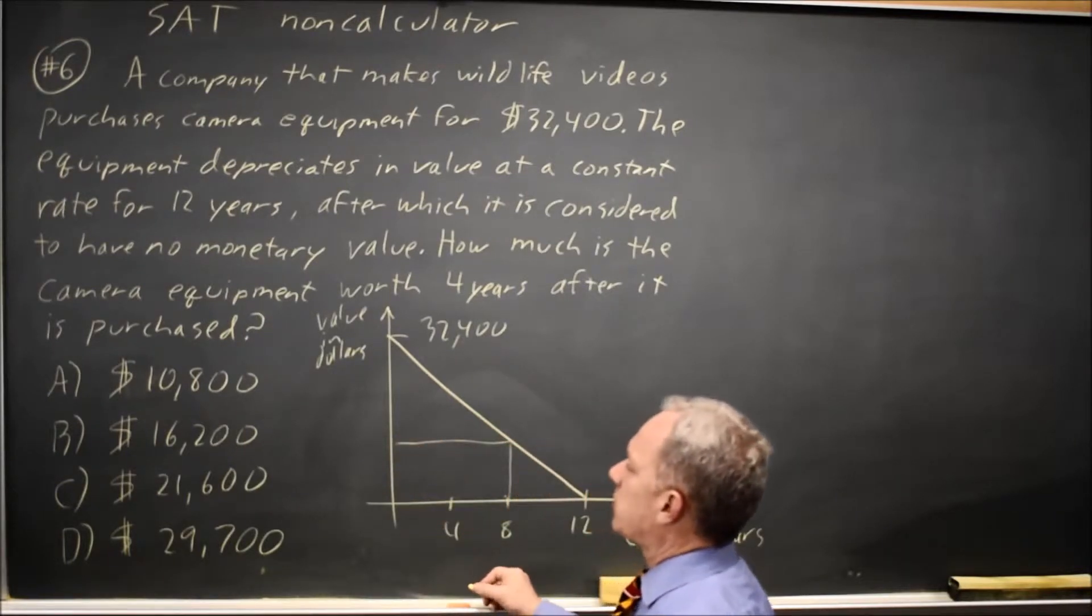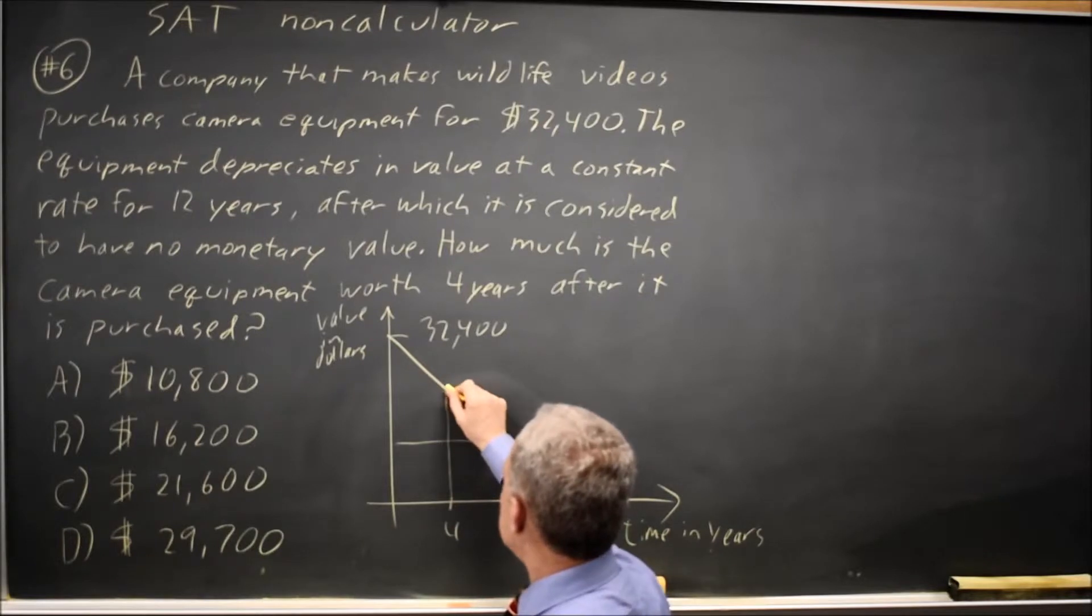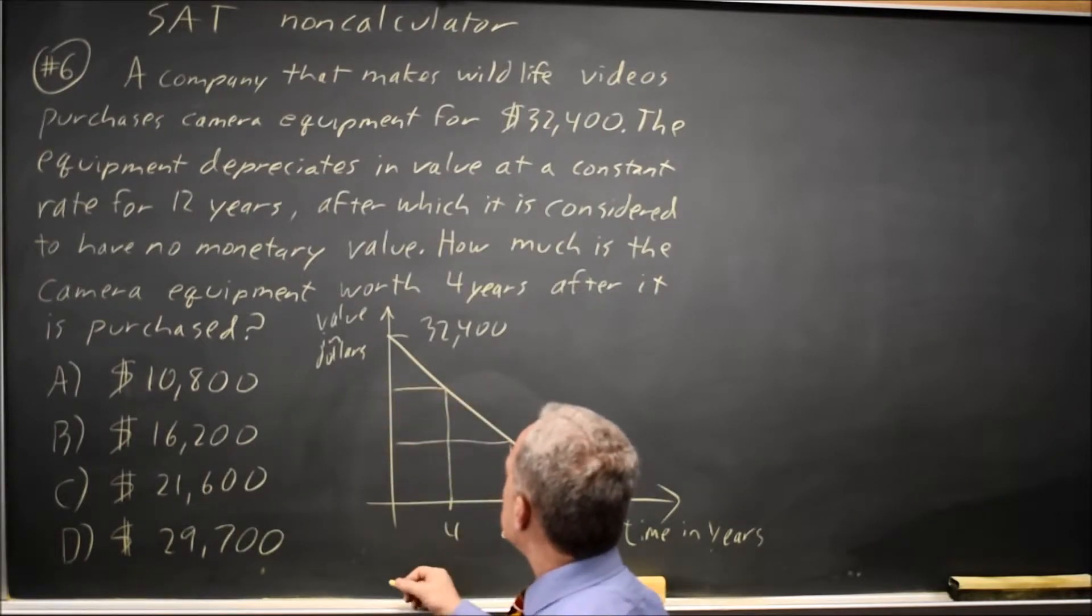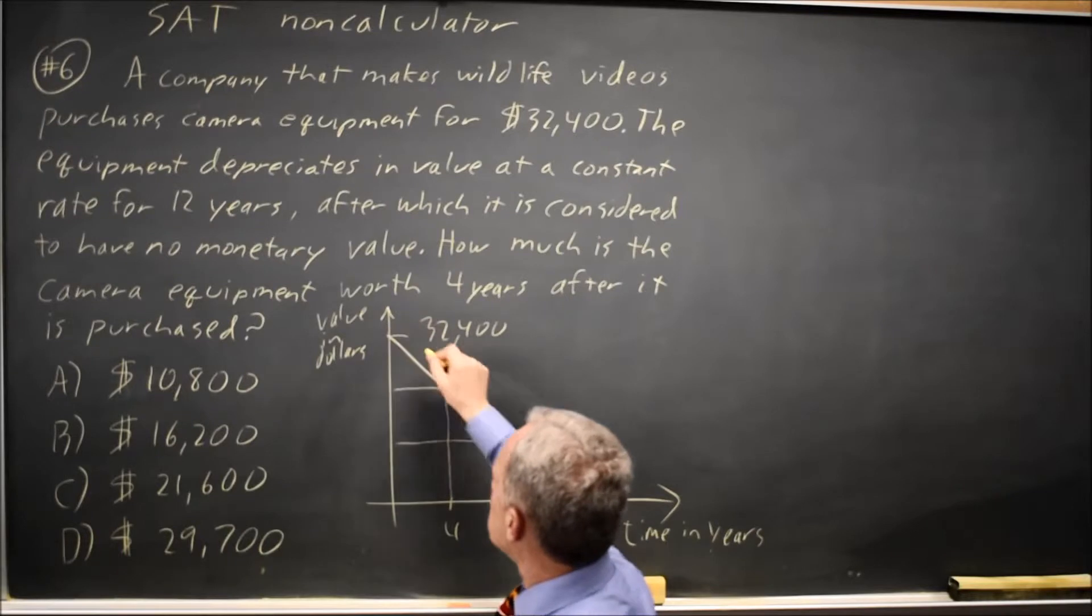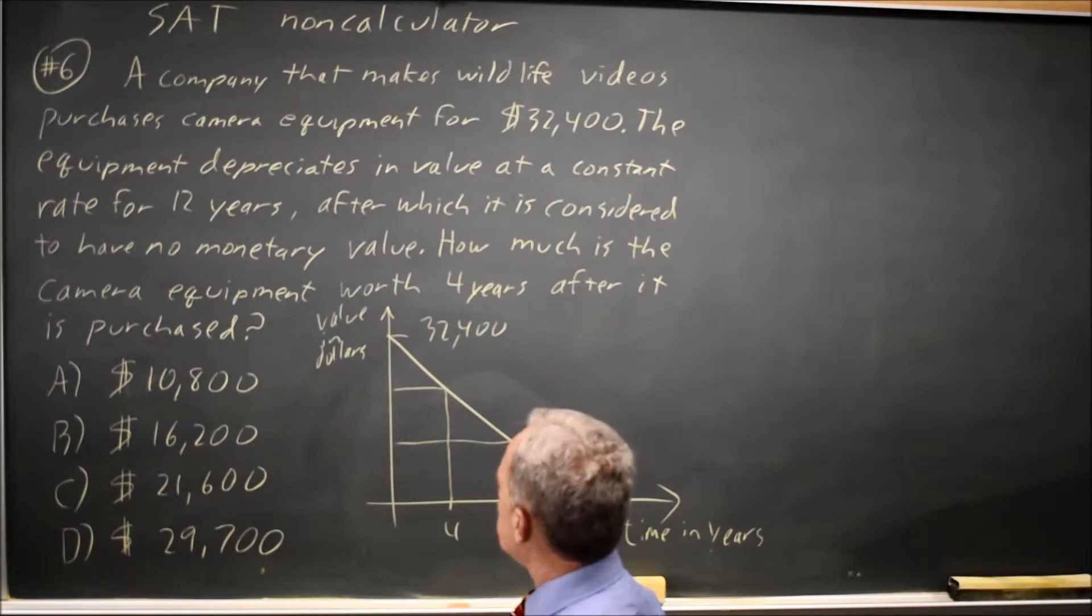At eight years, the camera equipment will retain one-third of its value. Four years, two-thirds of the value, because that's how you get linear. Three-thirds, two-thirds, one-third, zero-thirds, every third of the 12-year time period.